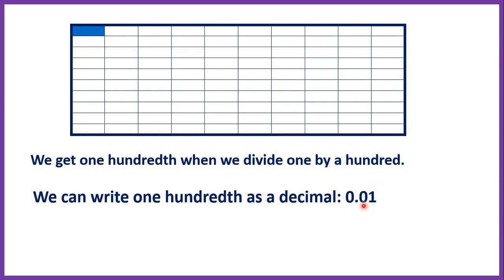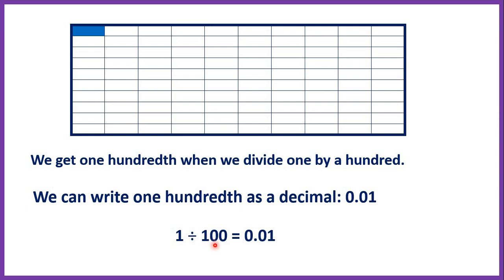The first digit after the decimal point tells us how many tenths we have, and then the second digit after the decimal point tells us how many hundredths we have. What we've shown here is that one divided by a hundred equals 0.01, or one whole divided by a hundred equals one hundredth.